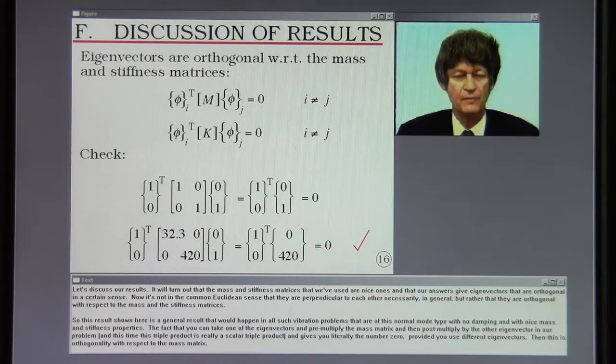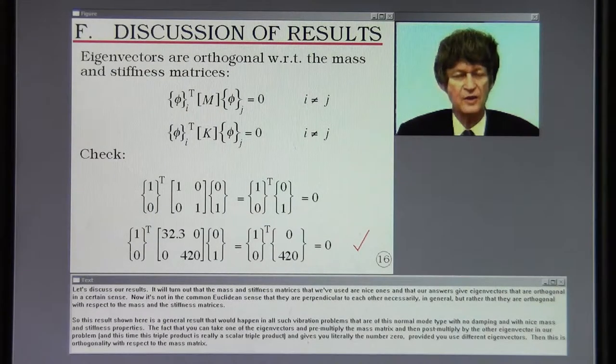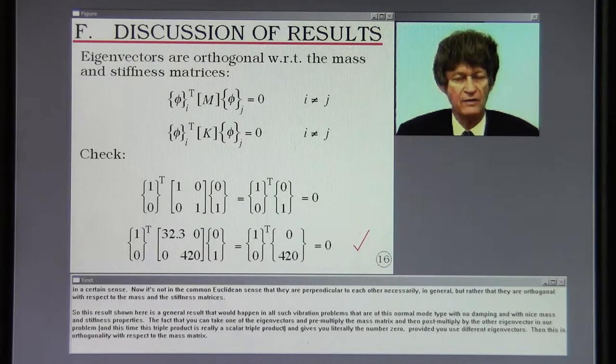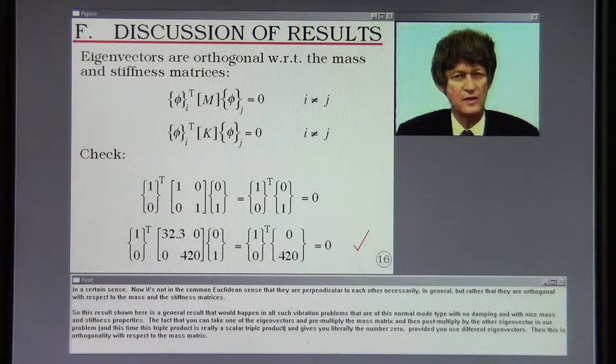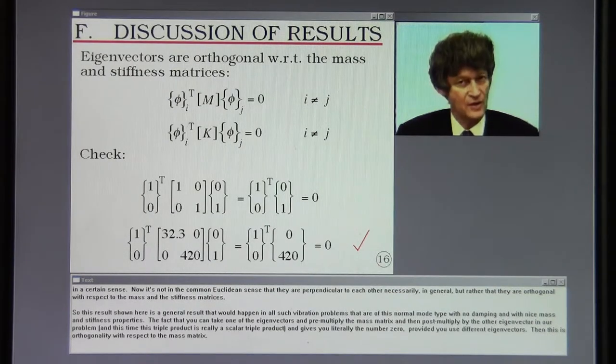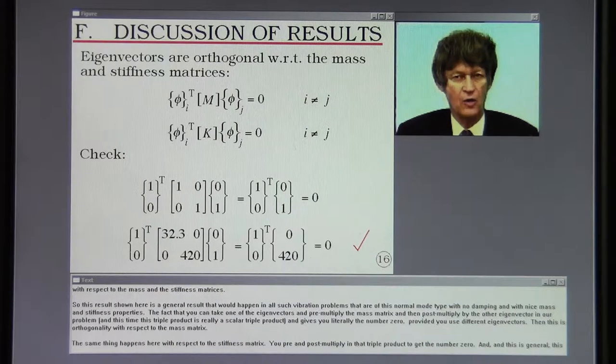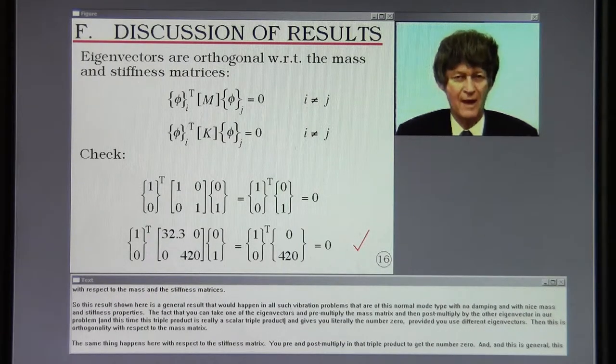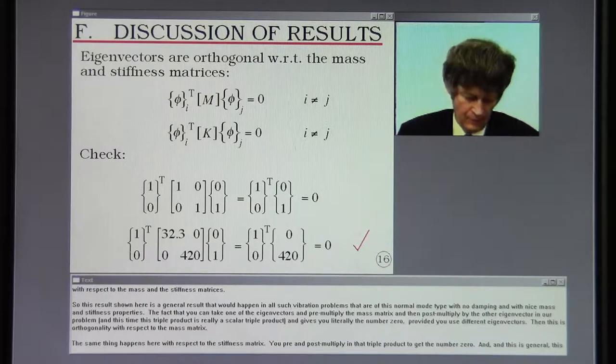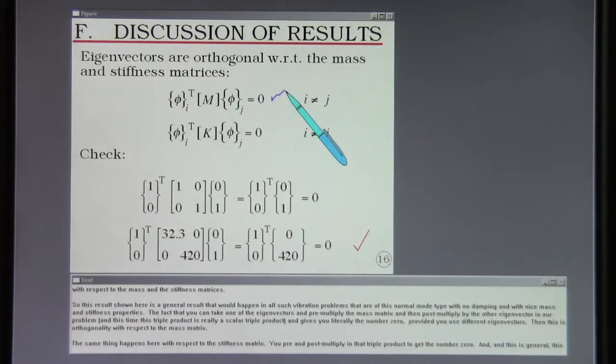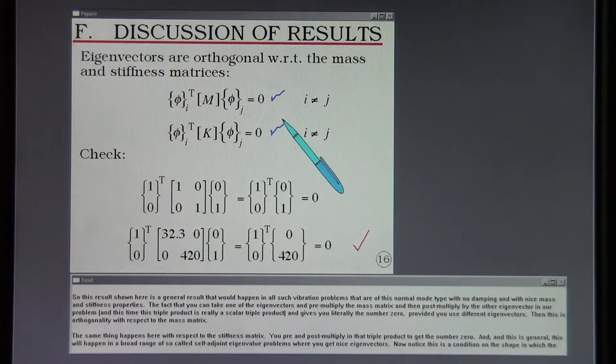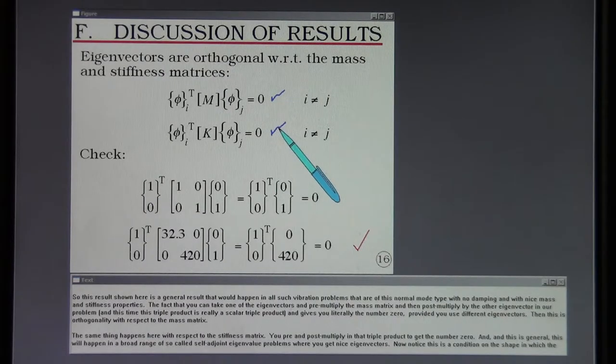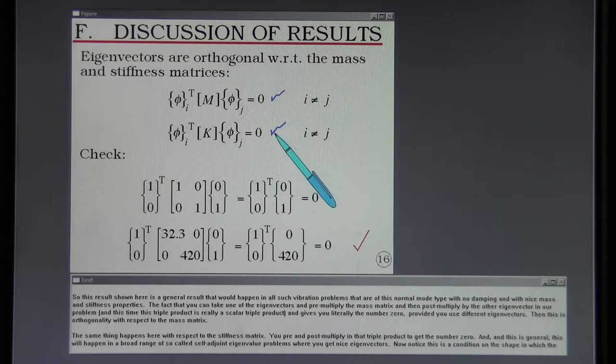Let's discuss our results. It will turn out that the mass and stiffness matrices that we've used are nice ones and that our answers give eigenvectors that are orthogonal in a certain sense. It's not in a common Euclidean sense that they are perpendicular to each other necessarily, but rather that they are orthogonal with respect to the mass and the stiffness matrices.